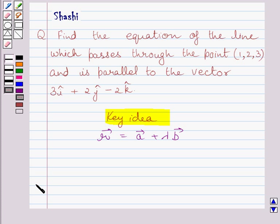Let us now start with the solution. We are given that the line passes through the point (1, 2, 3).